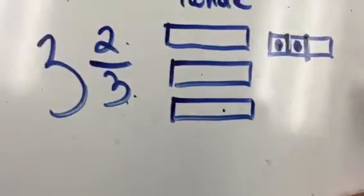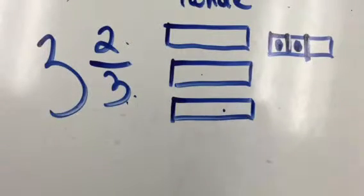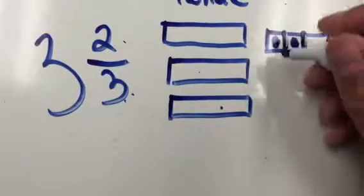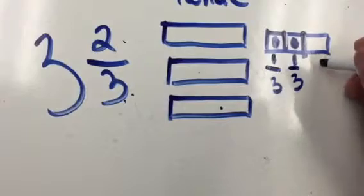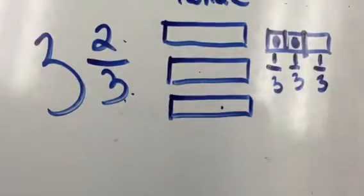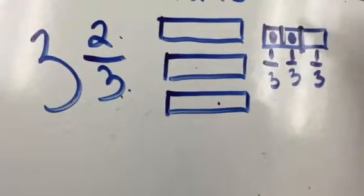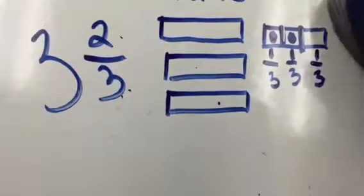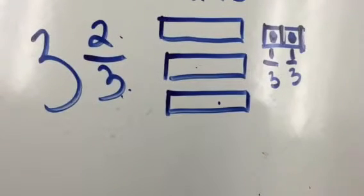So now this fraction, two-thirds, is represented here, and the whole number three is represented here. If you thought of it another way, this would be one-third, one-third, and one-third. Because if we took all these and added them together, we would get three-thirds, which is a whole. But in this case, we're just modeling the number we have here - three and two-thirds.